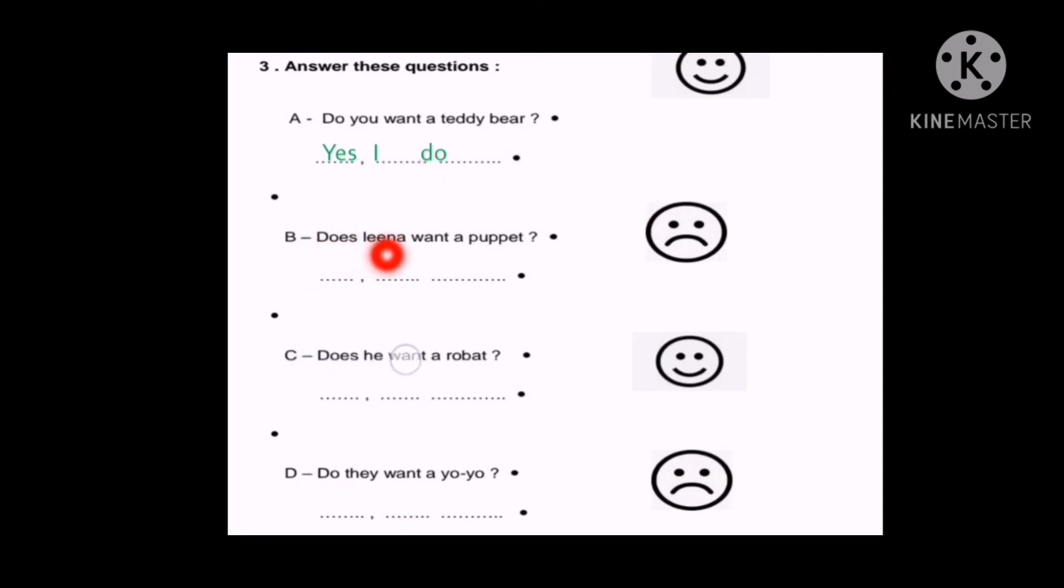Now B: Does Lina want a puppet? Sad face. So no she doesn't. Because Lina is a girl. Perfect. Then she takes the pronoun she. No she doesn't.